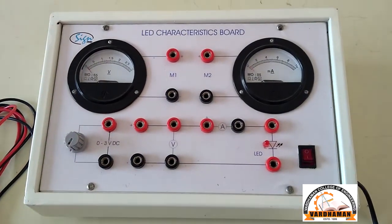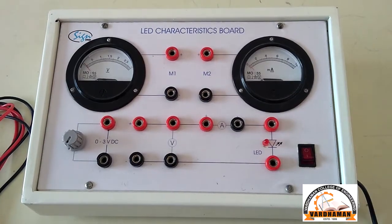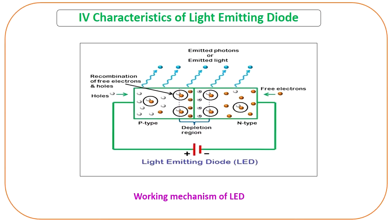We will see some of the theory behind this LED. LED means light emitting diode and it is a specially designed p-n junction diode. It works in forward bias condition. How is it different from a p-n junction diode? The difference lies in energy dissipation.